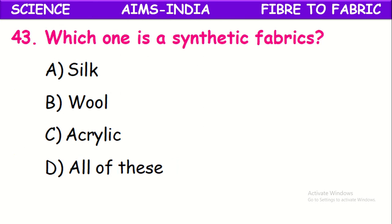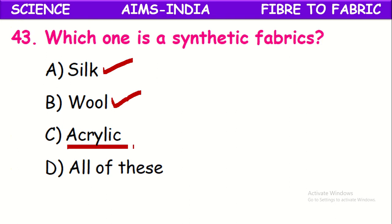Which one is a synthetic fiber? Out of silk, wool, and acrylic — silk is an animal fiber, wool is also a natural animal fiber, but acrylic is prepared in the laboratory. So acrylic is the synthetic fiber.